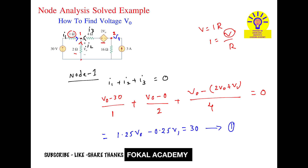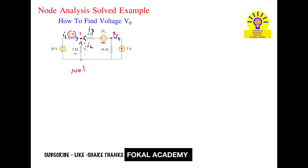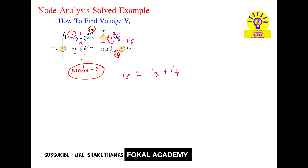Now apply node analysis at node 2. Find the current directions at node 2 — the current entering is 3 amperes. Let this be i4 and this be i5. i5 is entering, and i3 and i4 are leaving at node 2. So, sum of incoming equals sum of outgoing: i5 equals 3 amperes.